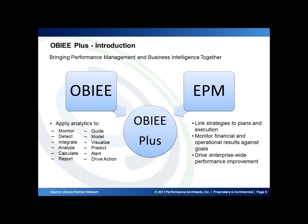OBIE applies analytics to monitor, detect, integrate, and analyze — basically to do full BI analytics across the enterprise. One of the key pieces is the alerts and predictive analytics to drive specific actions, so somebody is making a decision based on the analysis they're looking at and taking action. EPM is similar but it's more of a strategic and very focused product having to do with financials, plan executions for business, and performance improvement. Together they complement each other well in that when you monitor financial and operational results against goals, that's done in EPM but really extends out into the OBIE area.